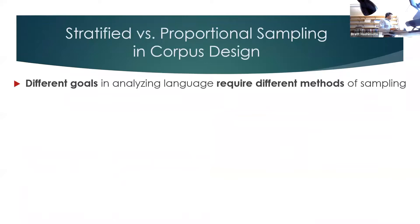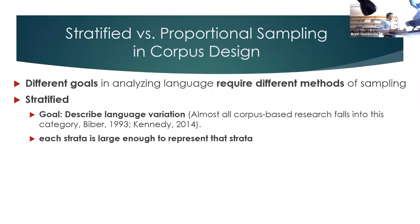In short, different goals in analyzing language require different methods of sampling. Historically in corpus research, we have relied on stratified sampling because the goal has been to describe language variation primarily. When sampling, we try to have strata that are large enough to represent each stratum because we want to know what's going on within each variety of language.